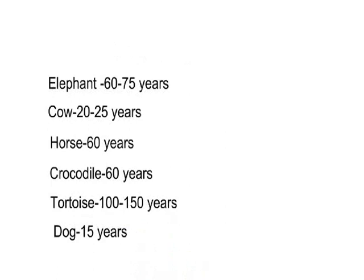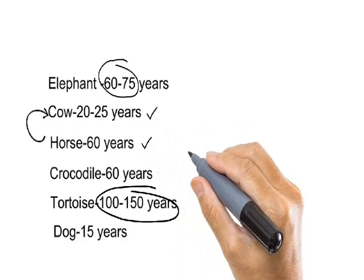As you can see, there is no relation between the size of an organism and its lifespan. It is not the case that larger organisms live longer and smaller organisms live for a very short period of time. The lifespan of the elephant is 60 to 75 years, yet the tortoise, which is smaller, lives for 100 to 150 years. Similarly, horse and cow are nearly equal in size, but the horse lives for 60 years while the cow lives for only 20 to 25 years.